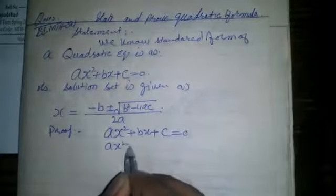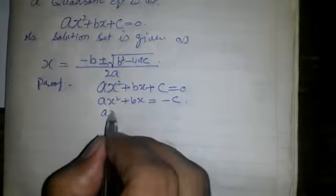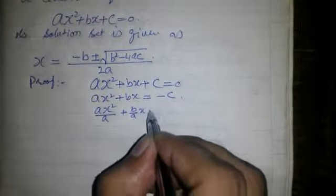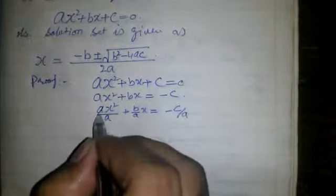Ax² + Bx = -C. Now divide both sides by A. Ax²/A + B/A·x = -C/A.